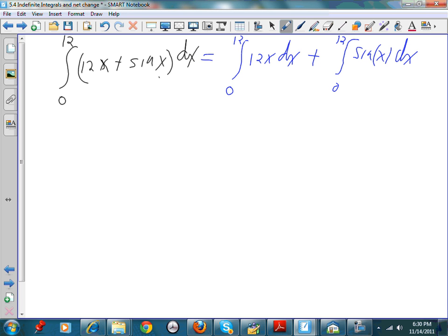Well, what's the antiderivative of 12x? That's just going to be 6x squared. Verify yourself. If I take the derivative of 6x squared, sure enough, I'm going to come back with 12x.